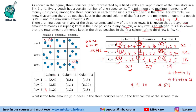The first question: what is the total amount in the three pouches kept in the first column of the second row? The answer is second row, first column — the total amount is 13 rupees.